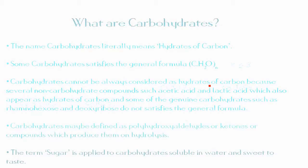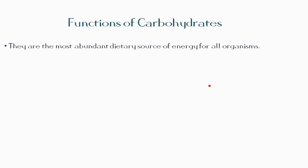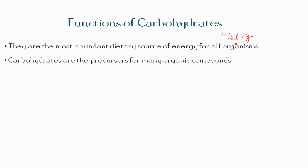Carbohydrates are the most abundant dietary source of energy for all organisms, yielding about four calories per gram of energy. Carbohydrates are also precursors for many organic compounds, including fats and amino acids.